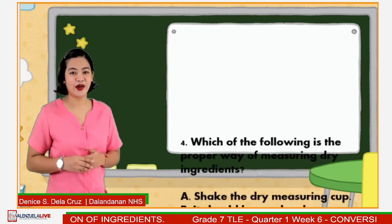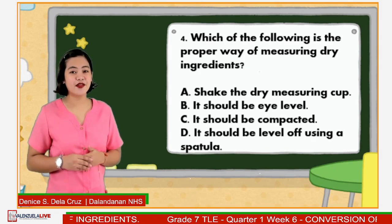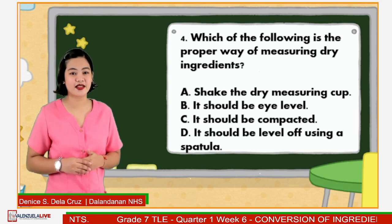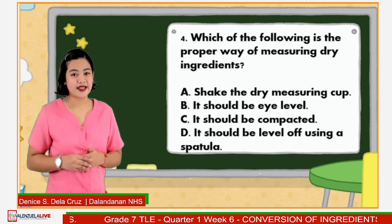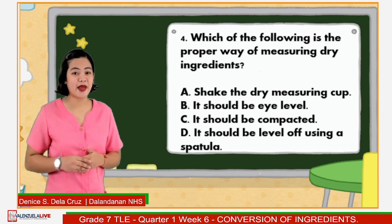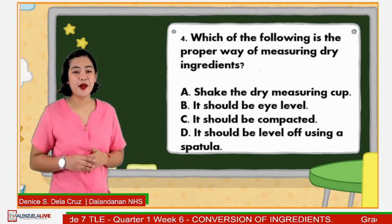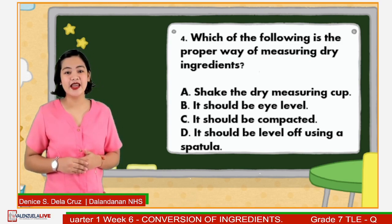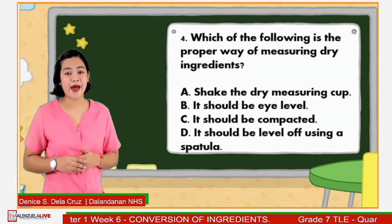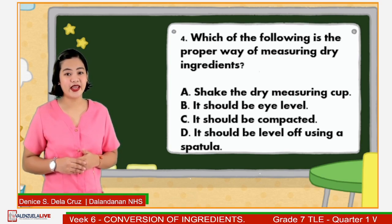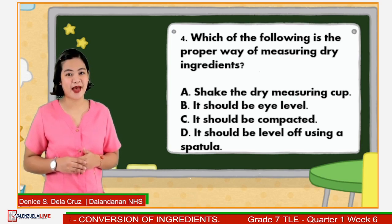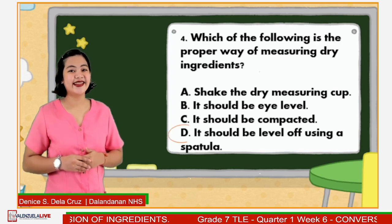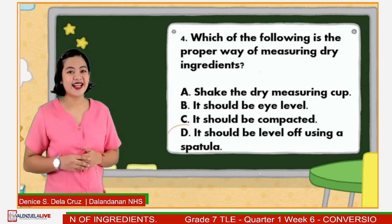Number 4: Which of the following is the proper way of measuring dry ingredients? Is it A: Shake the dry measuring cup? B: It should be eye level? C: It should be compacted? Or D: It should be leveled off using a spatula? Great job! The answer is letter D.